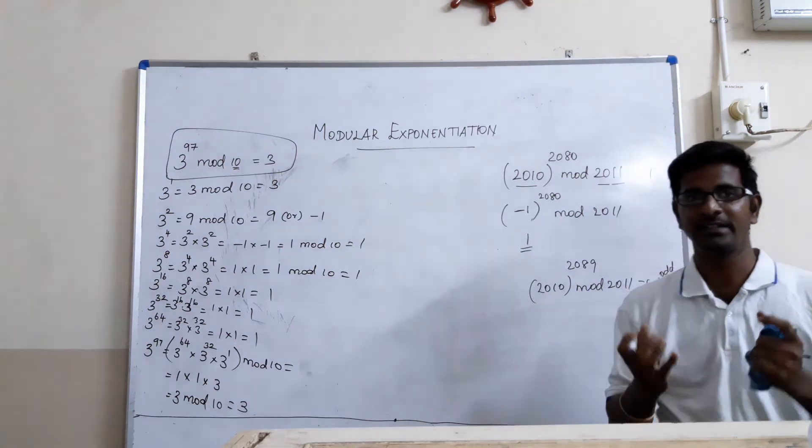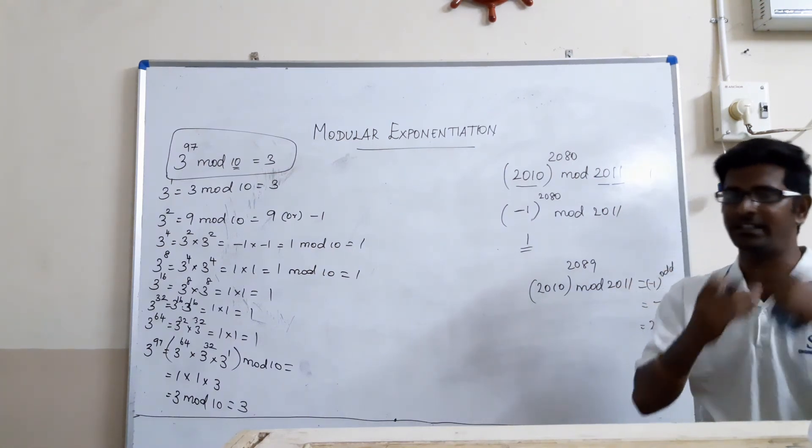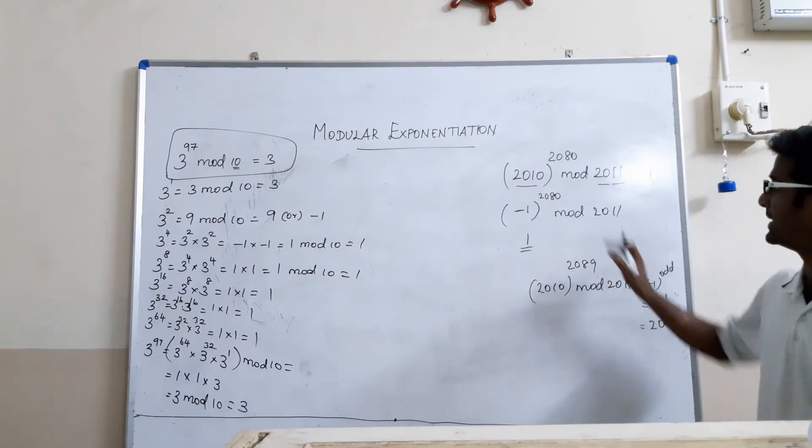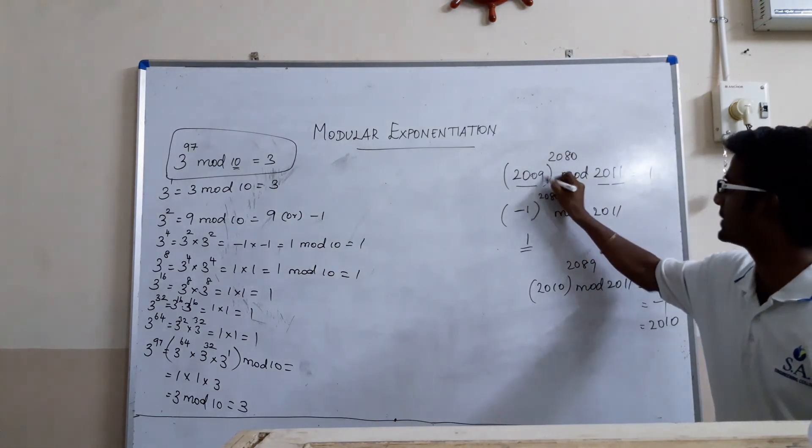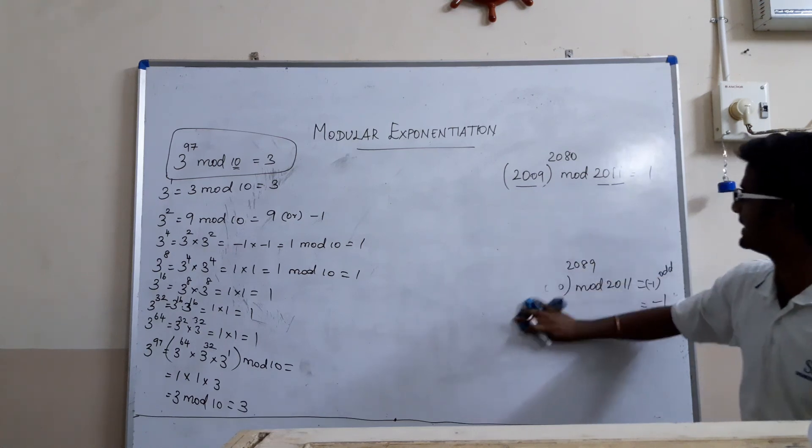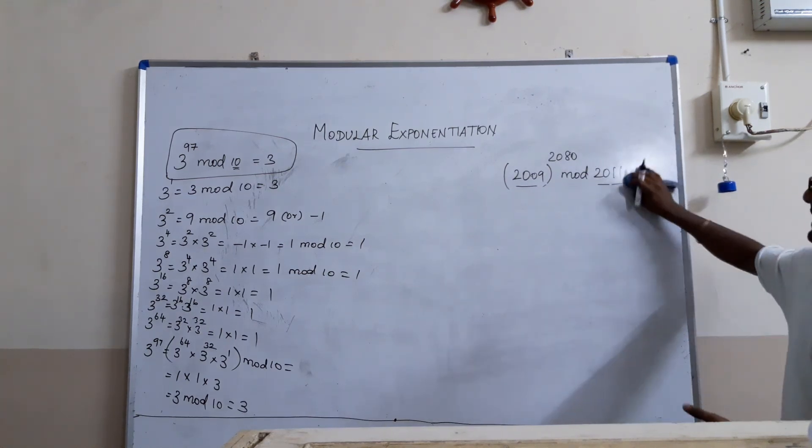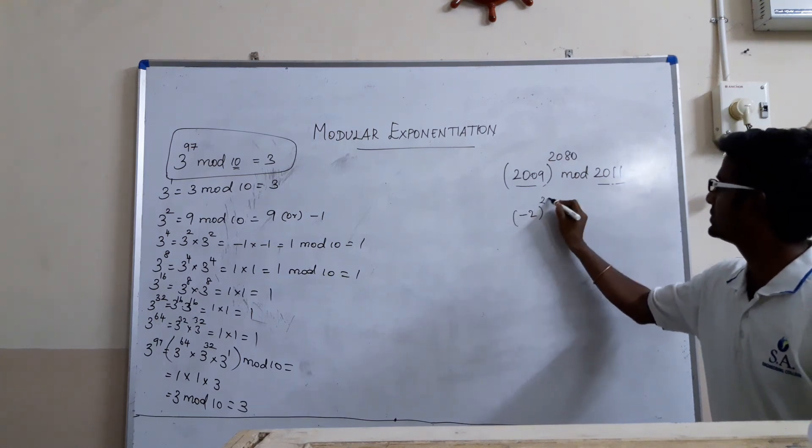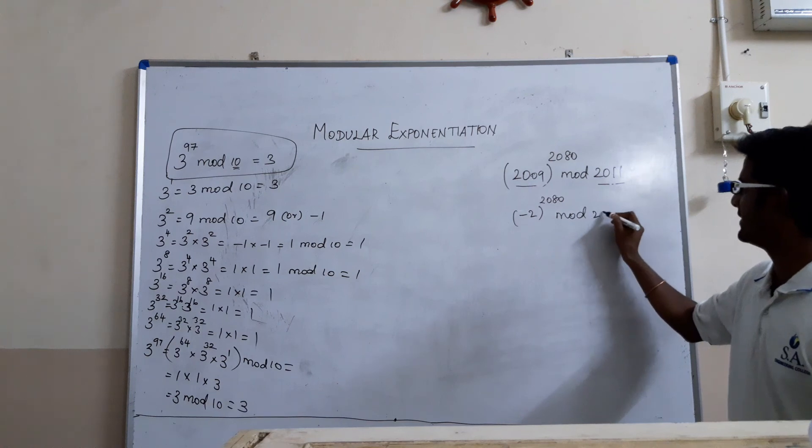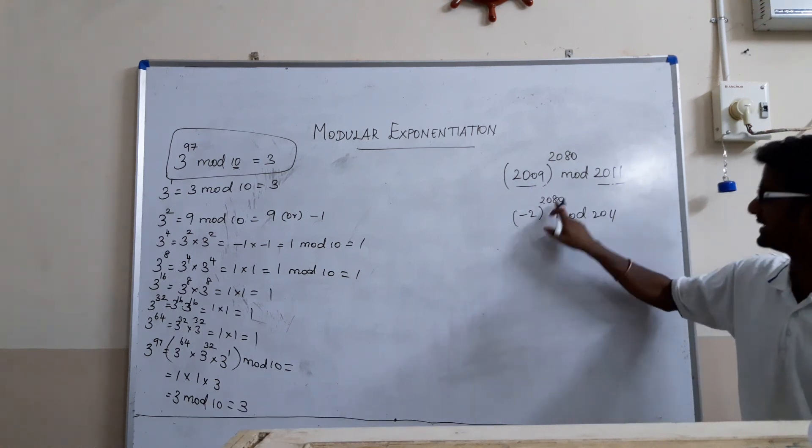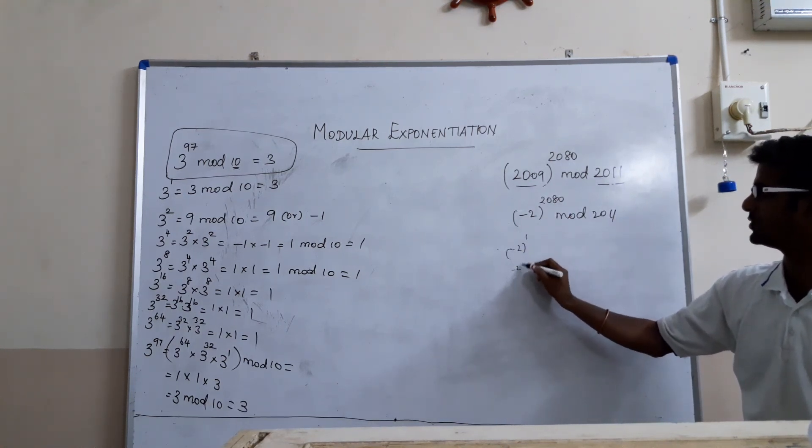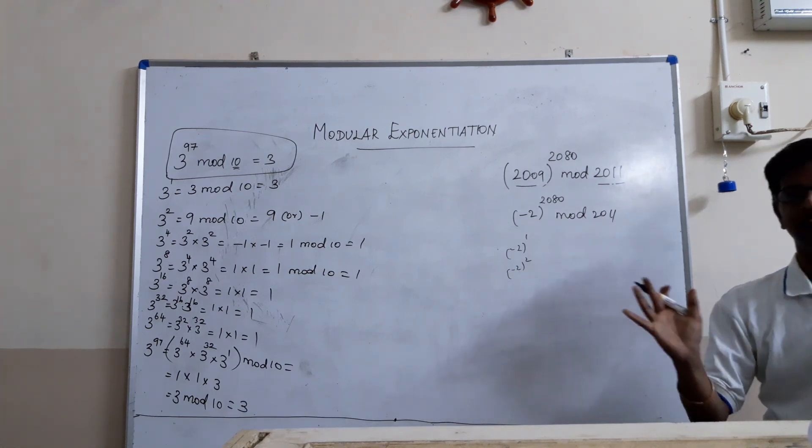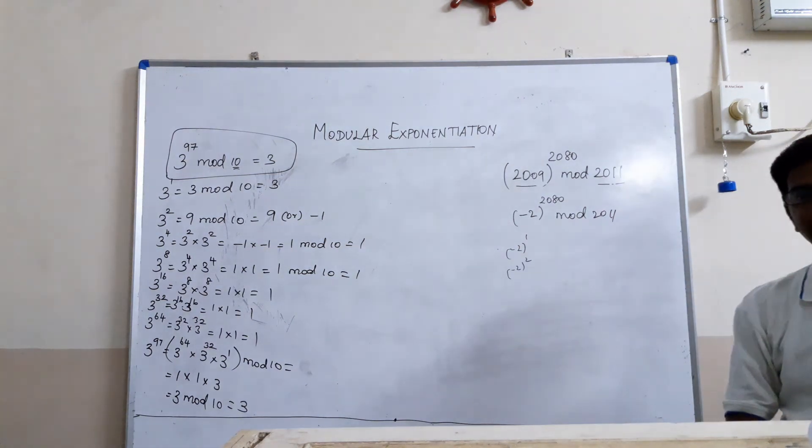So, what I mean to say here is, you just reduce the number as much as you can. Whether it is a positive number or a negative number, you reduce the number. If it is like 2009, instead of solving it with 2009 mod 2011, you just compare these two. This is minus 2. Isn't it? 2080 mod 2011. Now, solve the problem with this. So, minus 2 whole power 1, minus 2 whole power 2, like that. If you solve like this, your answer anyway, the final answer will be very perfect. Thank you for watching.